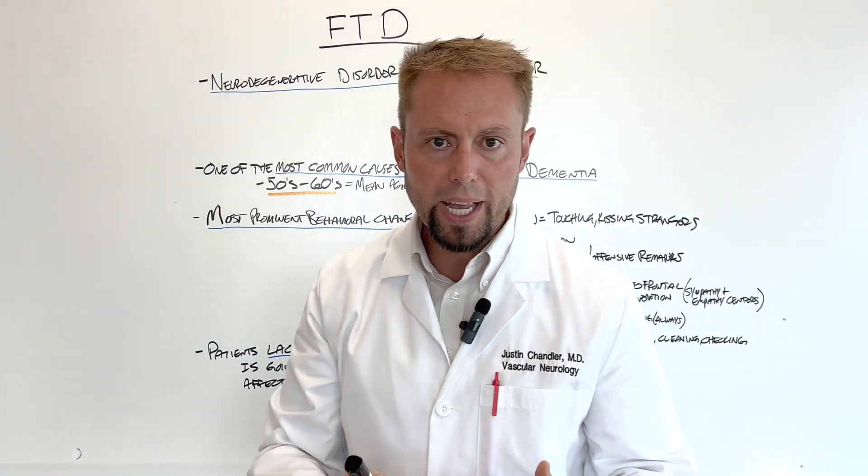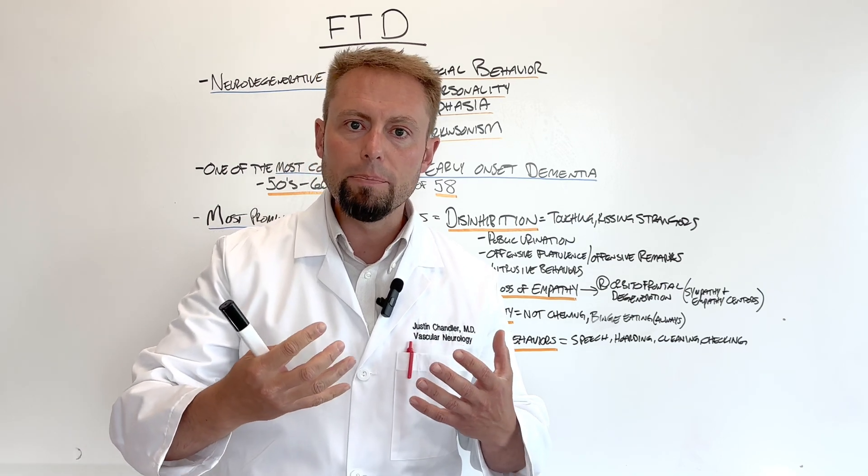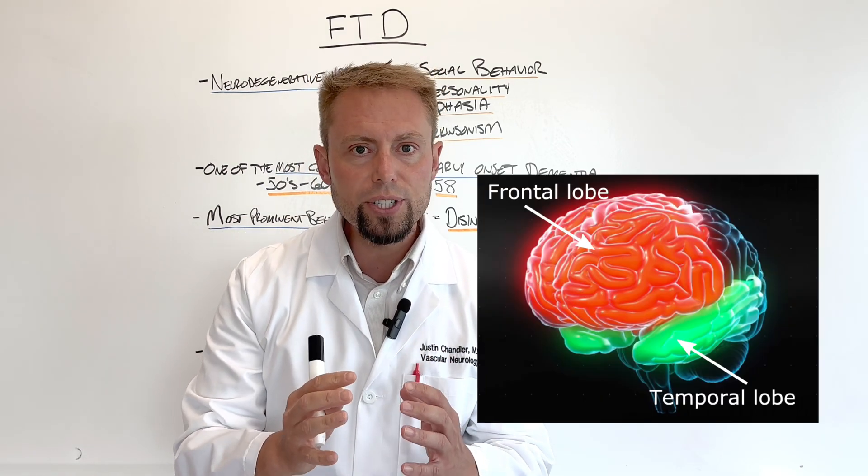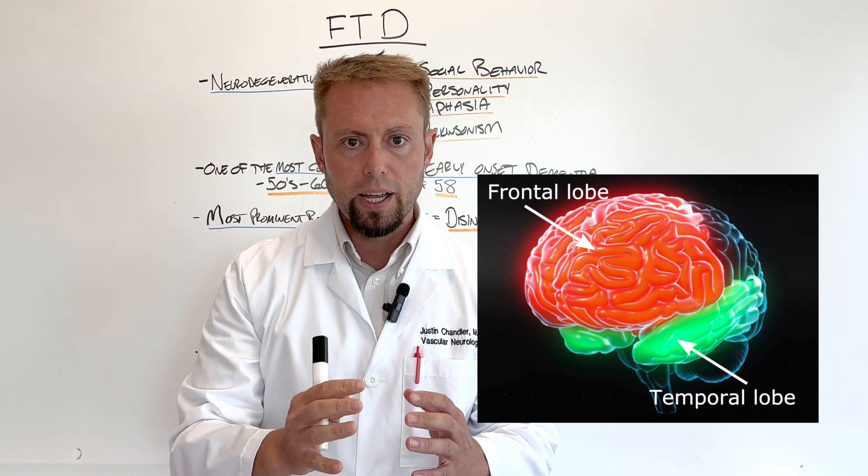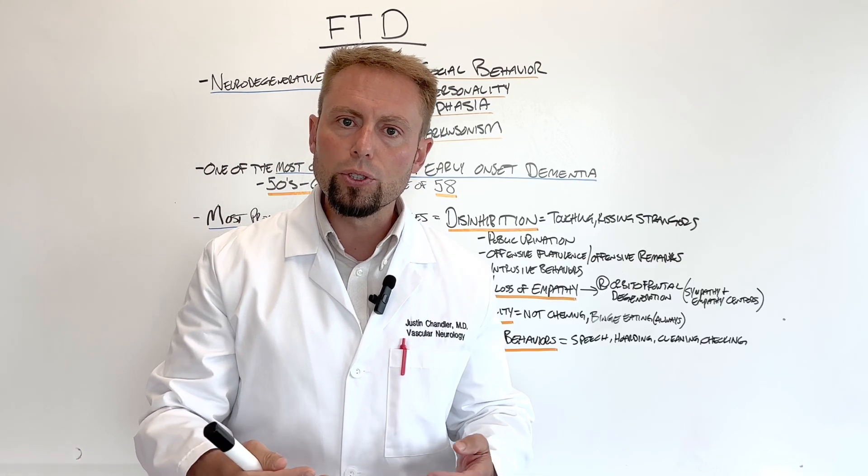That inappropriate social behavior often happens because people with Frontal Temporal Dementia—those are the regions of the brain that are affected—end up having disinhibition in their social interactions.